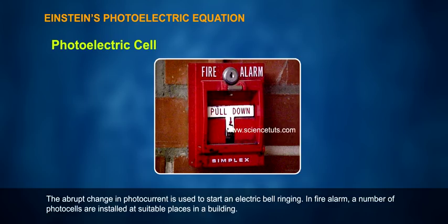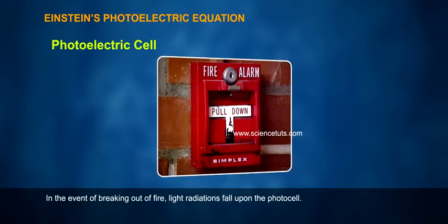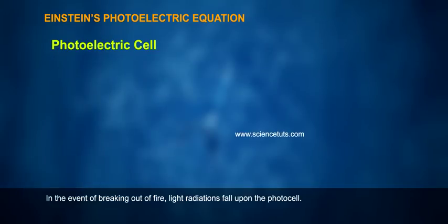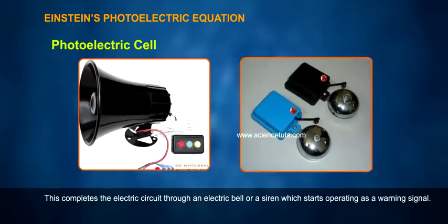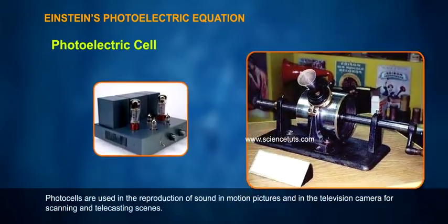In fire alarms, a number of photocells are installed at suitable places in a building. In the event of a fire breaking out, light radiations fall upon the photocell. This completes the electric circuit through an electric bell or siren which starts operating as a warning signal.